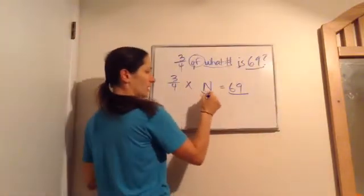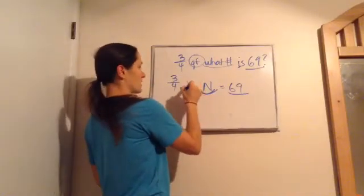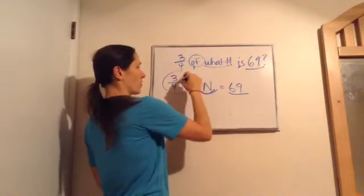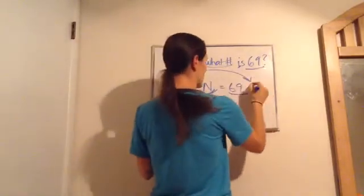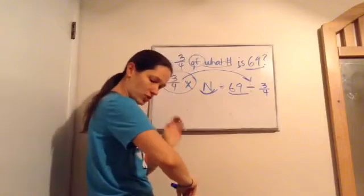We're basically trying to get the N by itself, right? So if this says 69 divided by three-fourths, we're going to move it across the equal side and it becomes divided by three-fourths. Now, what way would you answer this problem?